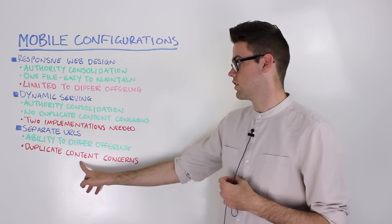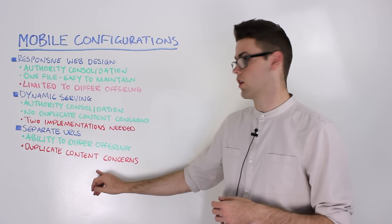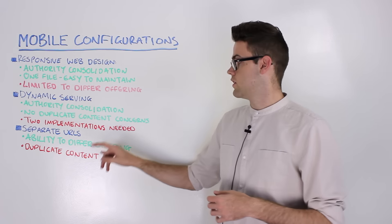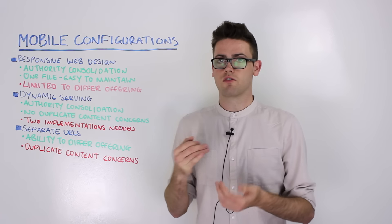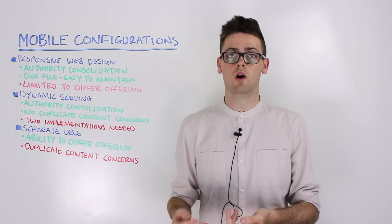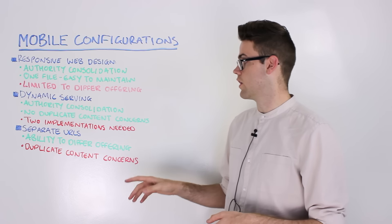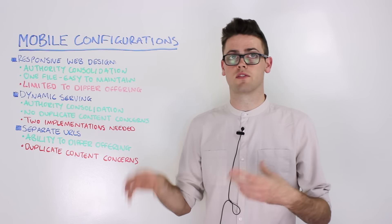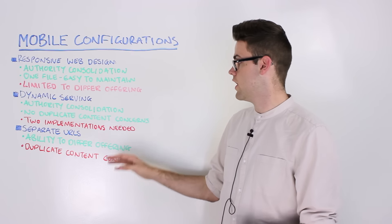One of the big concerns for separate URLs is duplicate content. With separate URLs, you have a rel alternate which notifies crawlers like Google that there's a mobile alternate to a desktop page. You have that on the desktop page of a website.